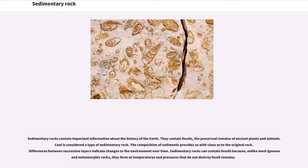Sedimentary rocks contain important information about the history of the earth. They contain fossils — the preserved remains of ancient plants and animals. Coal is considered a type of sedimentary rock. The composition of sediments provides us with clues as to the original rock. Differences between successive layers indicate changes to the environment over time. Sedimentary rocks can contain fossils because, unlike most igneous and metamorphic rocks, they form at temperatures and pressures that do not destroy fossil remains.